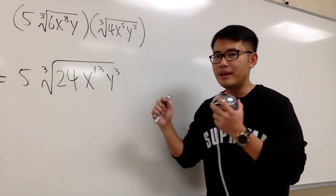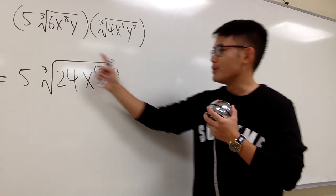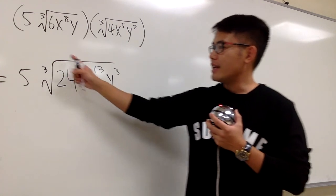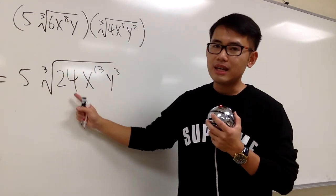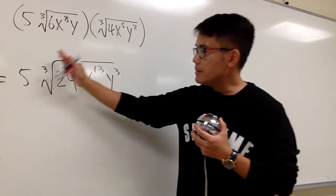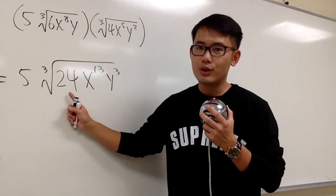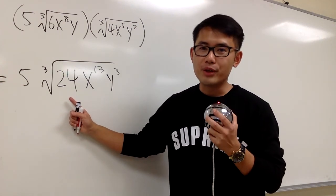This is the first step. Inside times inside, outside times outside. Then we are going to look at this cube root and try to simplify this. Let's take care of the number first. We have 24 inside of the cube root. To simplify this part, we are going to ask ourselves, what times what is going to give us 24, and one of the numbers should be a perfect cube.